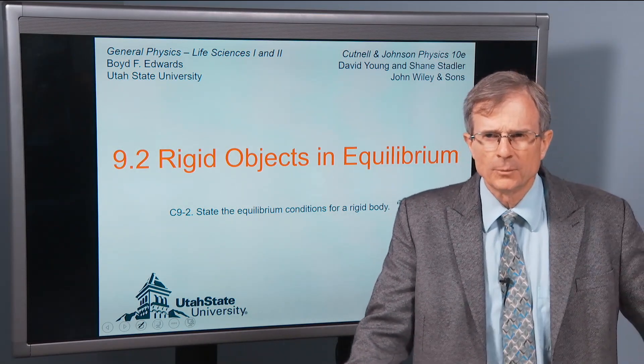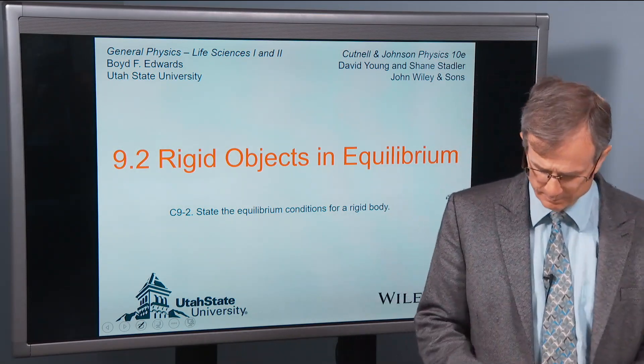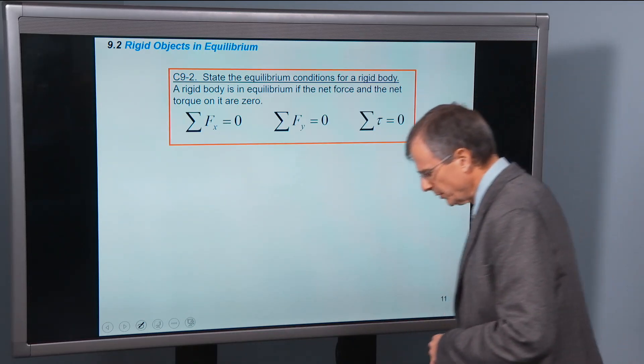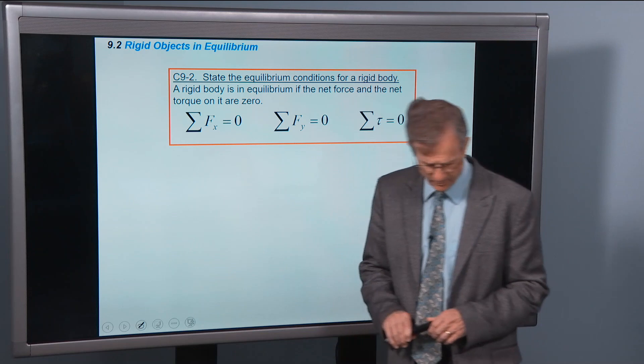Okay, second section: rigid objects in equilibrium. We talked about equilibrium before, I believe it was in chapter four.